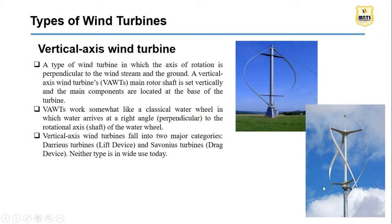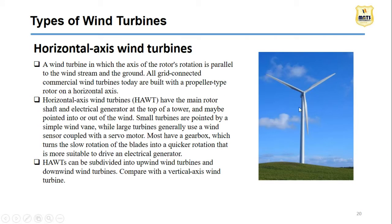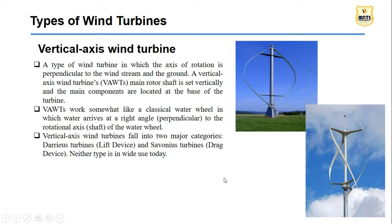The second type is the vertical axis wind turbine, where the axis of rotation is vertical and the main components are located at the base of the turbine. Vertical axis wind turbines are divided into two major categories: lift-type and drag-type. Vertical axis turbines are only research-oriented; they give better efficiency than horizontal axis turbines but lots of problems arise. Due to those problems, currently they are only used for research and development - commercially, only horizontal wind turbines are used nowadays.